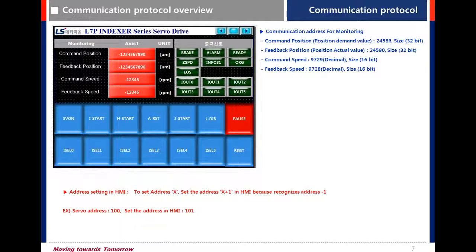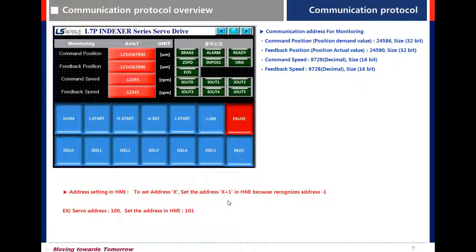To connect with an HMI using Modbus RTU protocol — this is an HMI from LSIS — you can see command position and feedback position. The command position address is shown here in decimal. You need to refer to the address and size in the manual. For address setting in HMI, to set address A, set address A plus 1 in the HMI, because the HMI recognizes address minus 1.